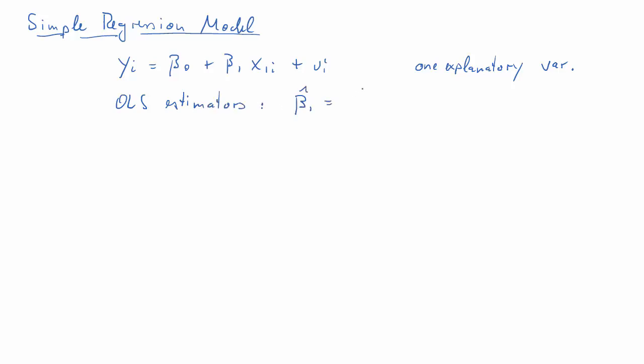Now you'll possibly know from your econometrics lectures that the OLS estimators for beta 1 hat looks like this, covariance between yi and x1i divided by the variance of x, and beta 0 hat is y bar minus beta 1 hat times x1 bar.